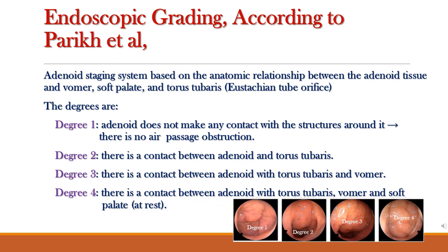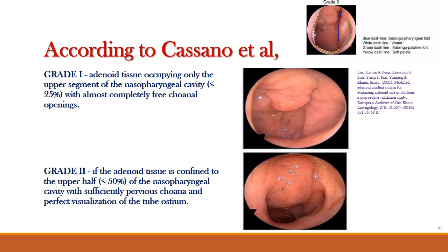The degrees of the endoscopic grading as per Parikh are as follows: in degree one, the adenoid doesn't make any contact with the surrounding structures and there is no airway obstruction, as shown in the figure. In degree two, there is contact between the adenoid and the torus tubarius. In degree three, there is contact between the adenoid with the torus tubarius and the choana as well. In degree four, there is contact between the adenoid with all structures including the soft palate at rest, and the whole airway is completely obstructed.